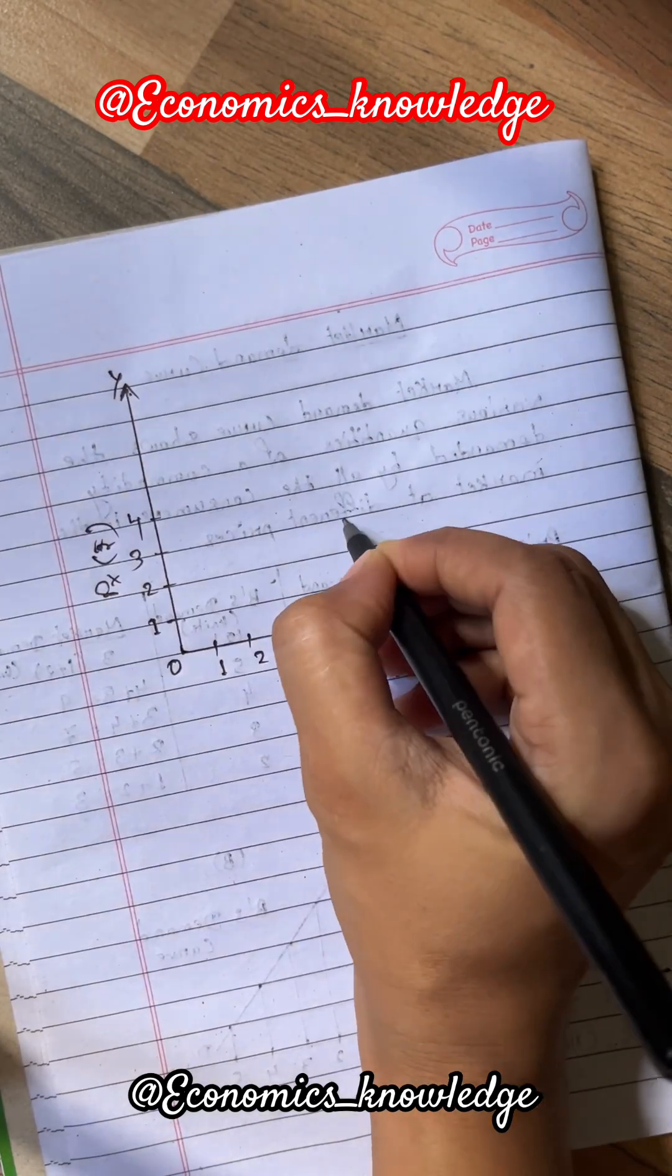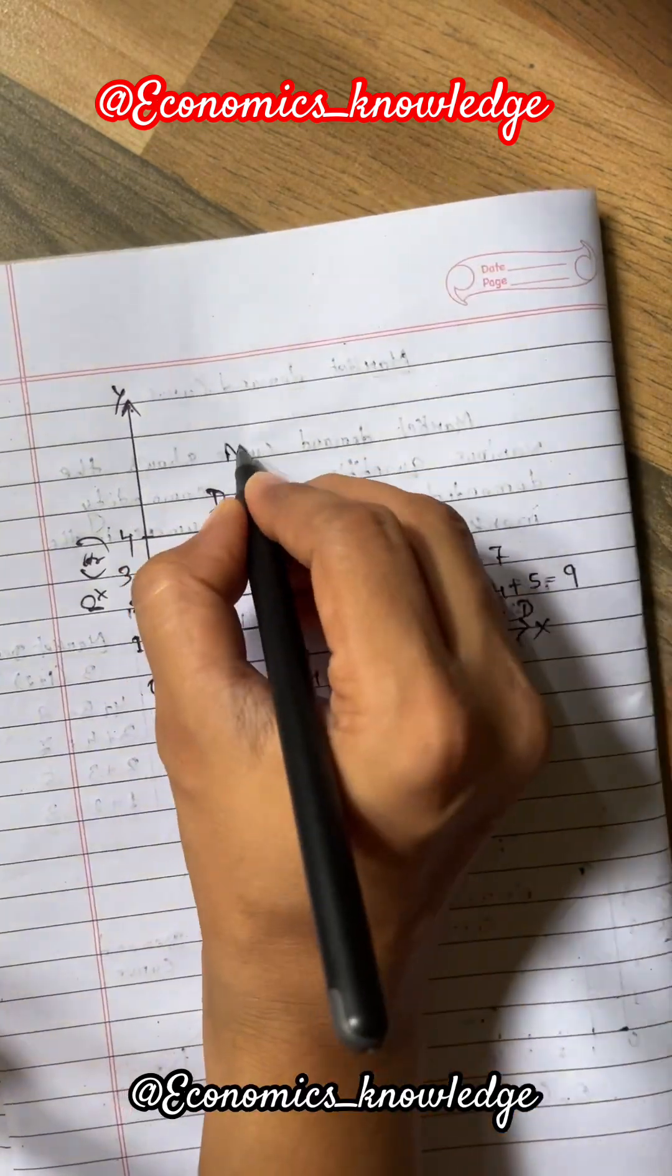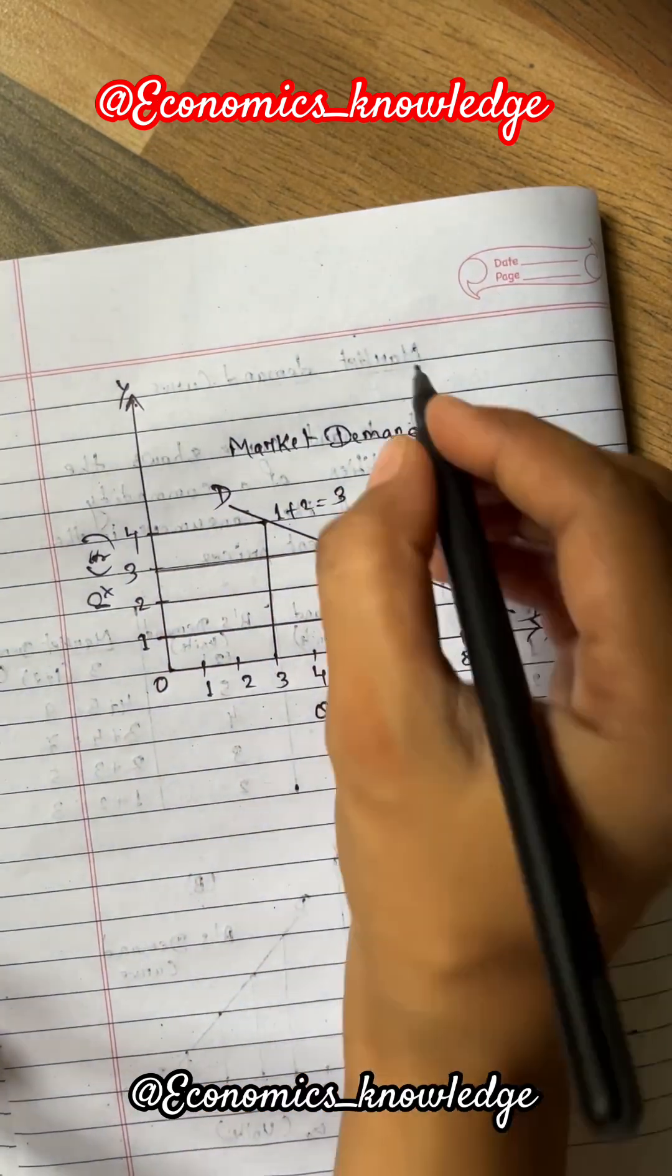We will put all the values of market demand in the diagram. By joining all the points we will get the market demand curve. Since market demand curve is the horizontal summation of individual demand curves, slope of this curve is also negative.